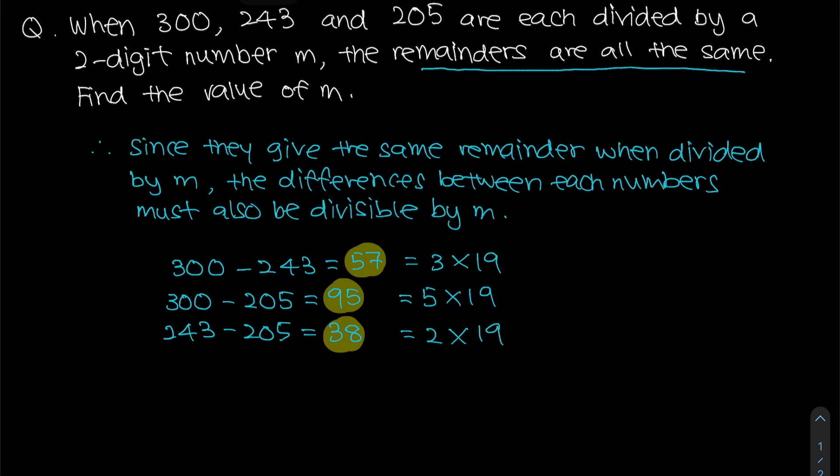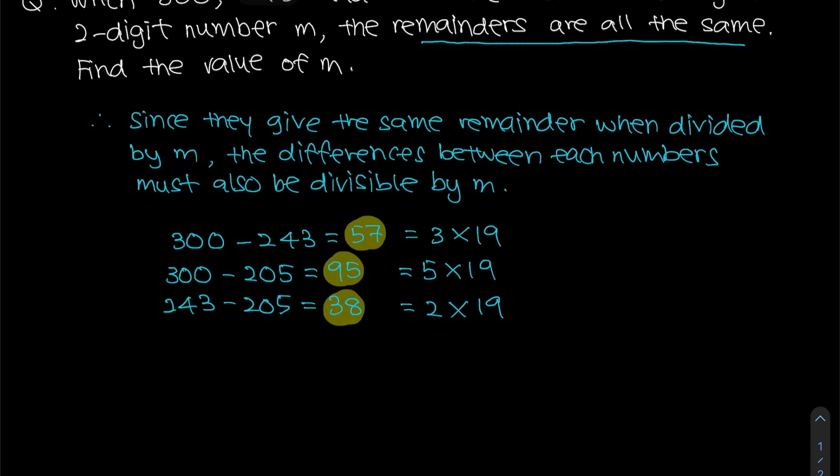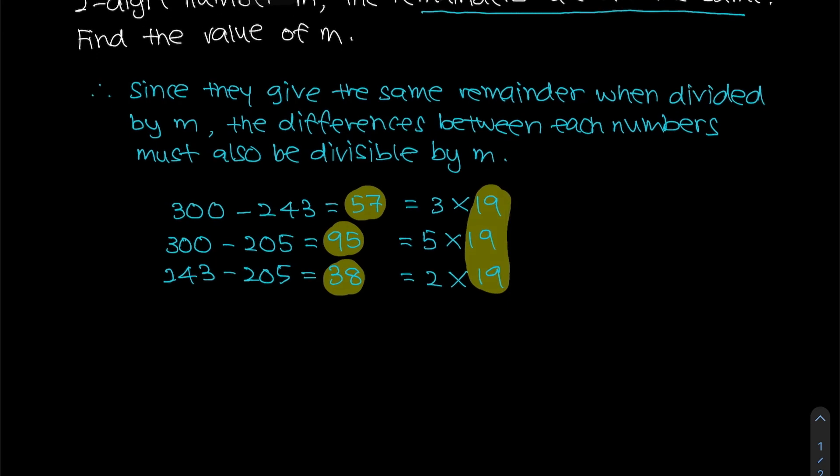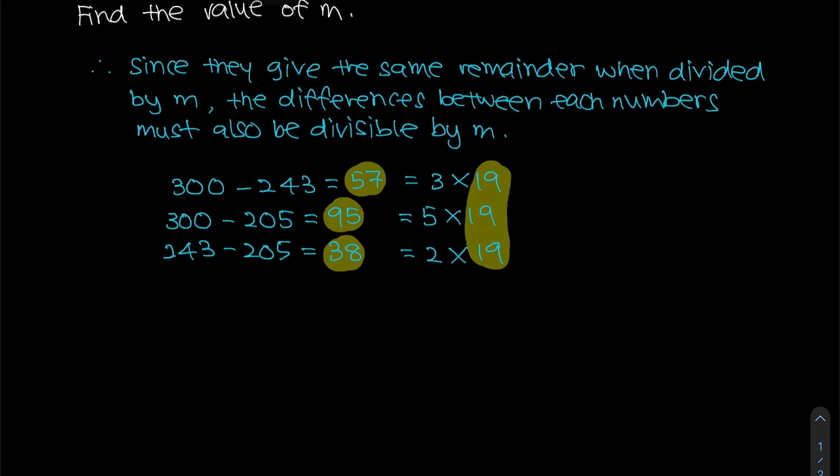So as you can see, since they give the same remainder when divided by m, the difference must also be divisible by m. So which is the common factor over here? The common factor is simply 19, which is also a two-digit number. So we can say that as m is a two-digit number, therefore m must be equals to 19. And that is your answer.